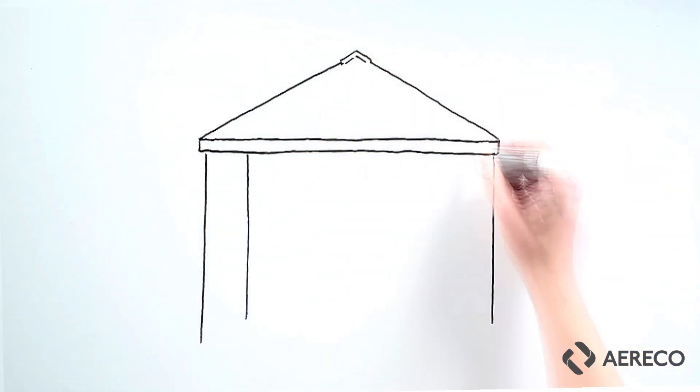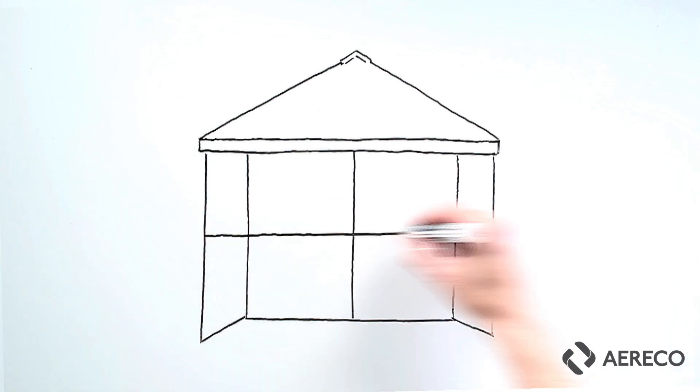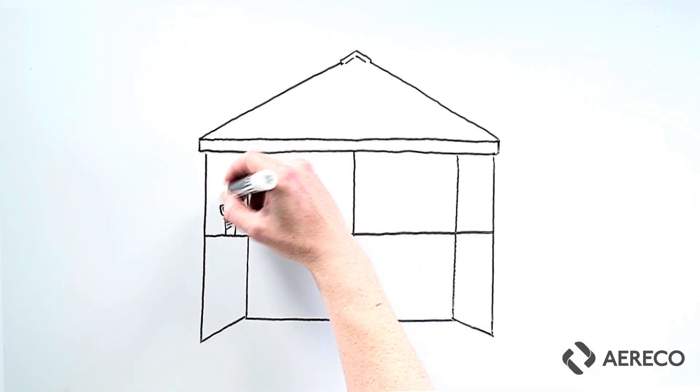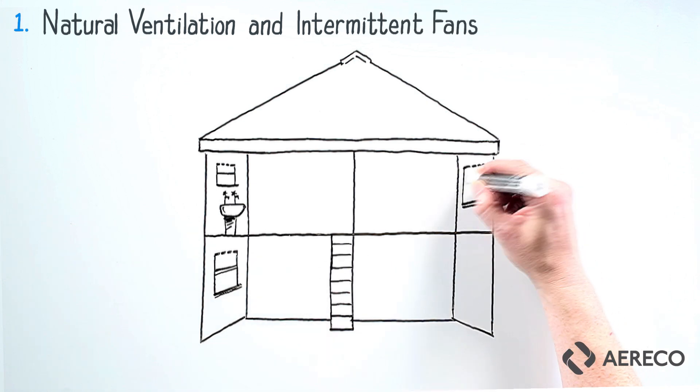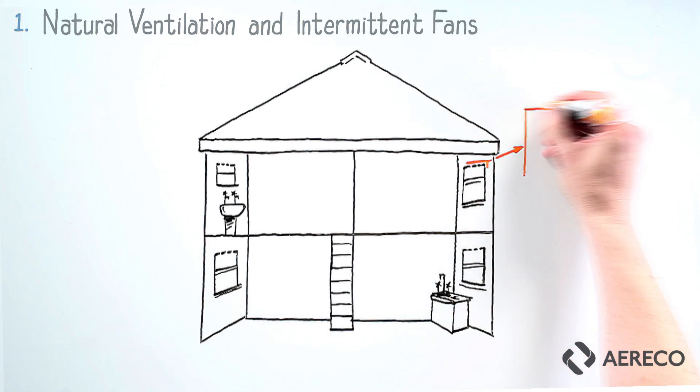In this video on system types, we're going to look at four typical systems that provide ventilation. One: natural ventilation and intermittent fans. This is a series of holes in the fabric of the building in walls or windows located in every room in the house.